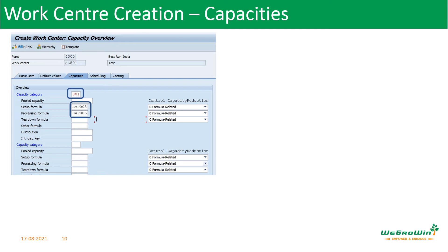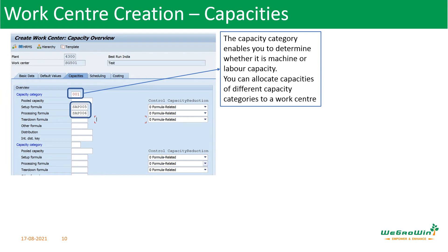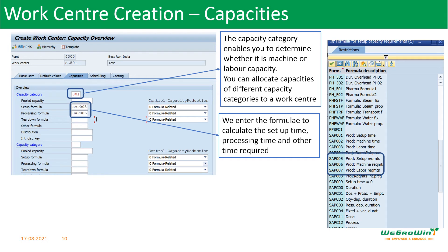In capacity, first you have to define the capacity category. For example, in the same machine, you can have a machine capacity and also a labor capacity — so we can have capacity category of machine and capacity category of labor, and both can be entered. Here we see machine capacity 001 is a machine capacity. We can allocate capacities of different capacity categories to each work center. Then we have the formula — there are many standard SAP formulas provided, such as SAP005 for calculating the capacity for setup requirements and SAP006 for machine requirement capacity.